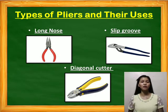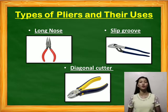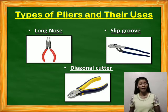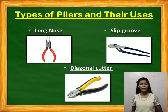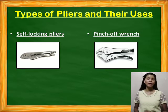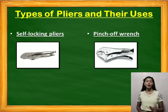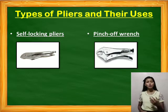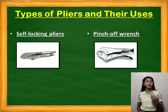Pliers and their uses: long nose pliers are tools used for holding nuts, screws, and for reaching hard-to-reach places. Slip-joint pliers are used for wider surfaces where required. The diagonal cutter is used for cutting wires only. Self-locking pliers are used for working in a place where the operator cannot use another tool. Pinch-off wrench is designed for refrigeration tubing to prevent loss of refrigerant.